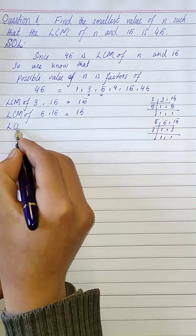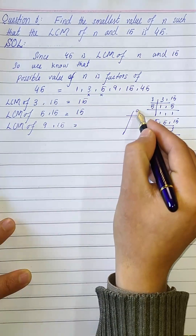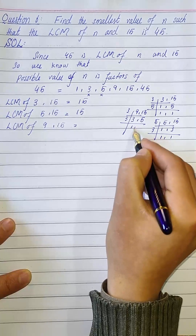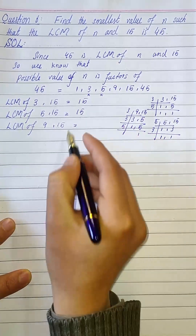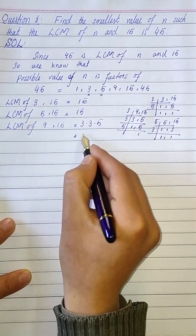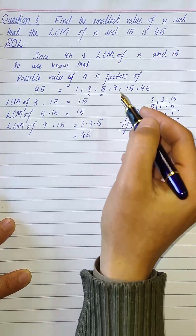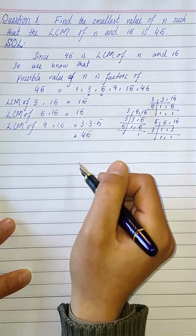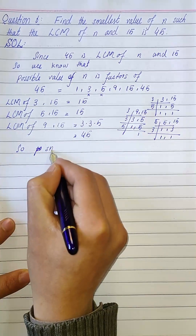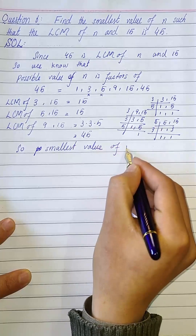Now we check LCM(9, 15). Using the table of 3: 3 times 3 is 9, and 3 times 5 is 15. Then 3 times 1 is 3, and 5 comes down, giving us 3 times 3 times 5, which equals 9 times 5, which equals 45. So the LCM of 9 and 15 is 45, and the smallest possible value of n is 9.